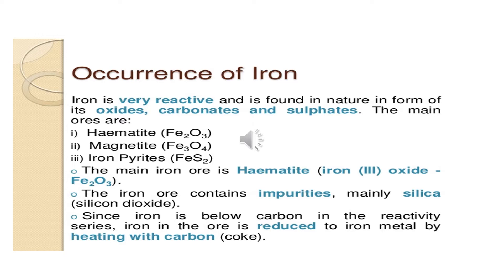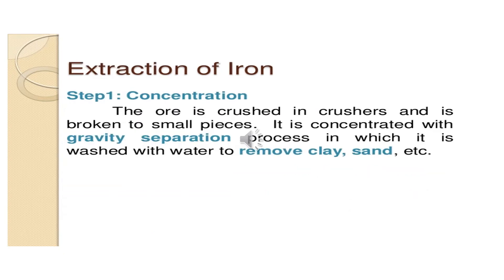In the Ellingham diagram, iron is below carbon in the reactivity series. Therefore, iron in the ore is reduced to iron metal by heating with carbon. Carbon acts as a reducing agent, which reduces other substances and itself gets oxidized. You have used this charcoal in the detection of basic radicals, that is metals, so you know the role of carbon. Iron is mainly extracted from hematite, that is Fe2O3.